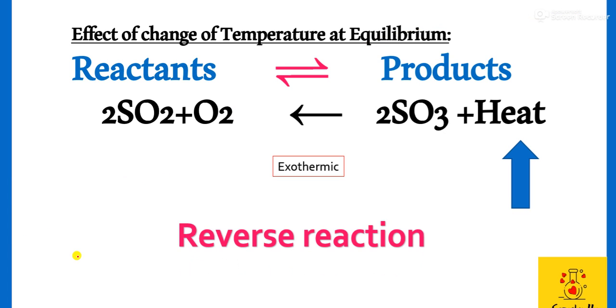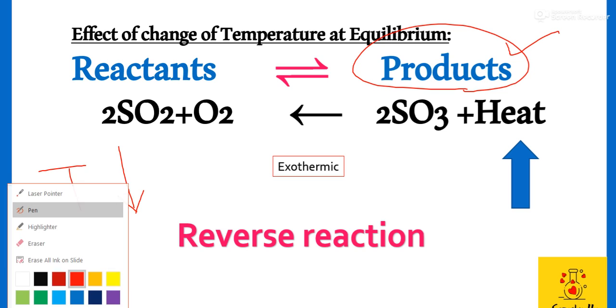So students, ab humane is poore concept se kya overall conclusion nikaala hai? Kye agar hum exothermic reaction ki product ko increase karna chate hai, toh humane temperature ko low karna padeega. Temperature ko low karna padeega, toh products increase ho ngi. Kye temperature ko increase karna se reactants increase ho jayate hai.